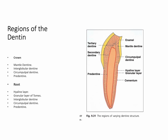To outline this part of the practical session: in the crown we are going to see different layers, namely the mantle dentine, the interglobular dentine, the circumpulpal dentine, and the predentine. In the root we are going to see the hyaline layer, the granular layer of Tomes, then the interglobular dentine, circumpulpal dentine, and predentine — a brief summary before we go into the details.